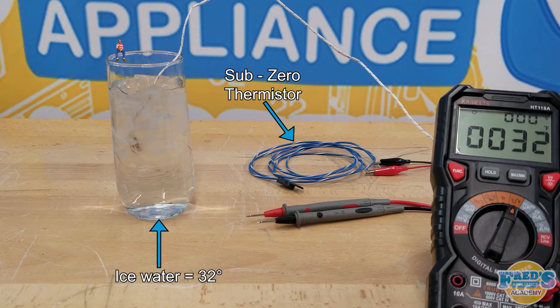Here I have the multimeter set to temperature and the thermostat that came with it is submerged in the water. The multimeter is reading exactly 0 degrees Celsius or 32 degrees Fahrenheit. Next we will submerge the thermistor while testing its resistance.